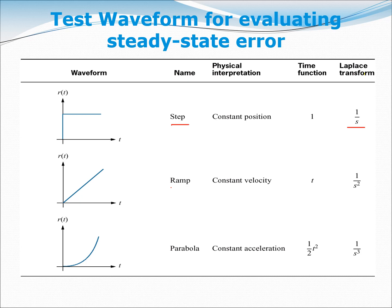The second row is a ramp function or ramp waveform. In the time domain, R(t) is equal to t, and if you do the Laplace transform of t, you will get one over s squared.